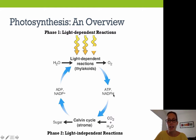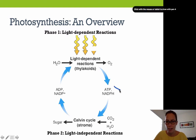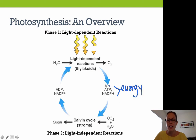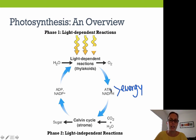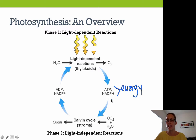ATP and NADPH are what we refer to as energy carriers. ATP is the main source of cellular energy in cells, and NADPH is another type of energy carrier used to power things as well. In the light-dependent reactions, light and water are used to produce oxygen, ATP, and NADPH.